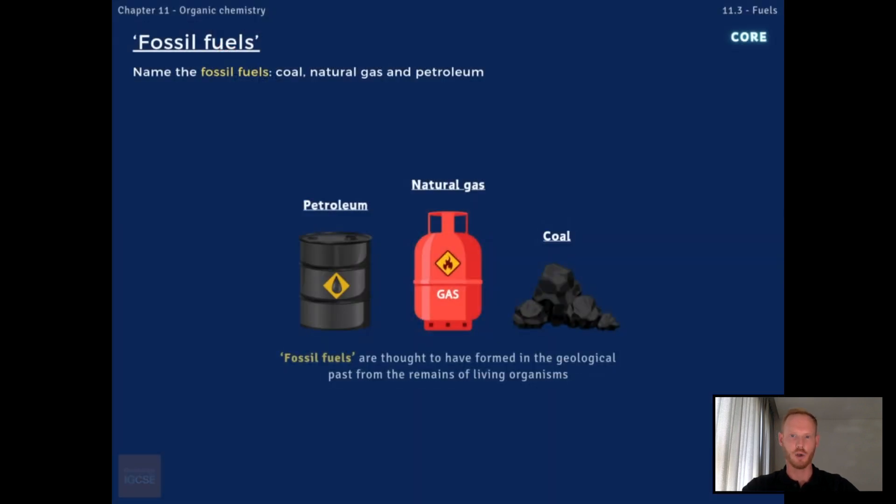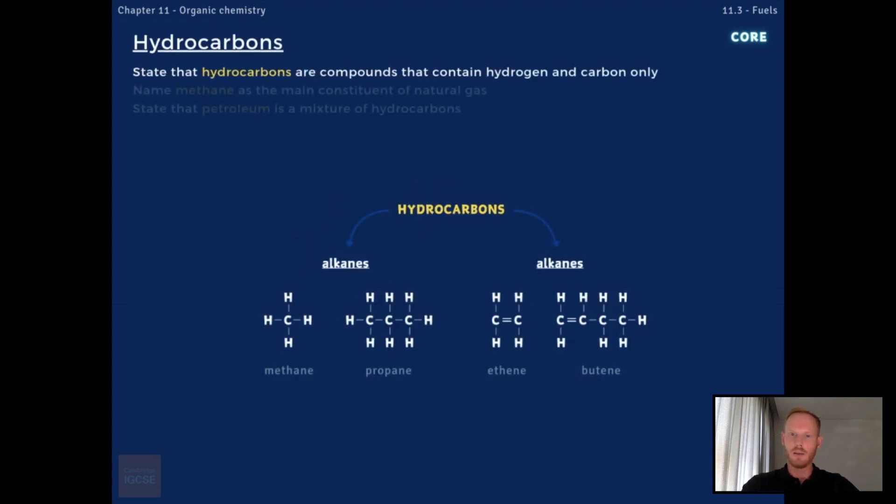Coal, natural gas and petroleum are often referred to as fossil fuels, as they're thought to have formed in the geological past from the remains of living organisms. Fuels like these are primarily composed of hydrocarbons, which are organic compounds that contain covalently bonded hydrogen and carbon atoms only. Examples include alkenes, such as ethene and butene, and alkanes, like propane and methane, which is the main constituent of natural gas.